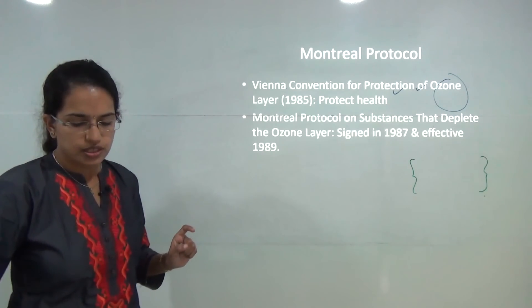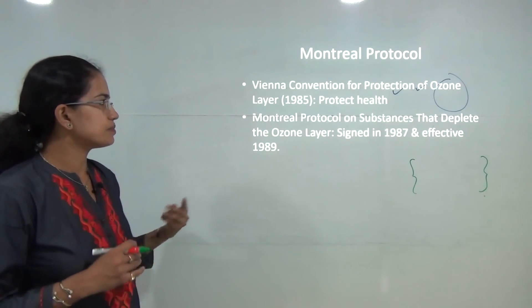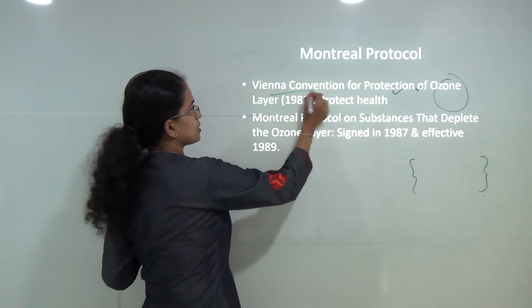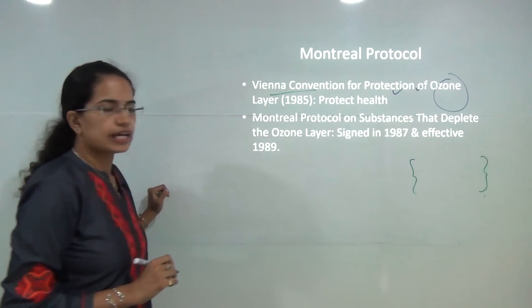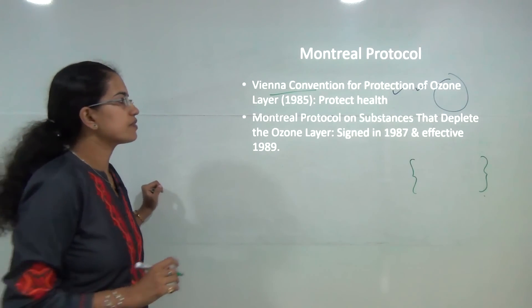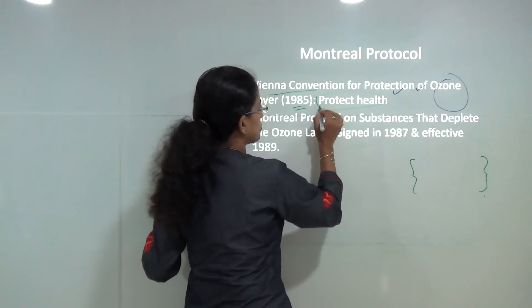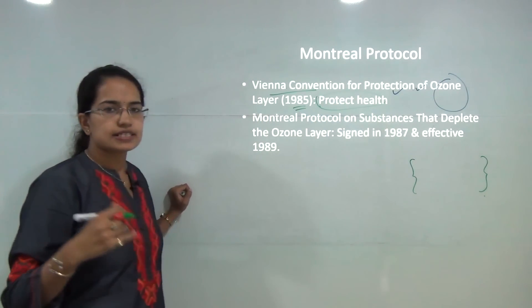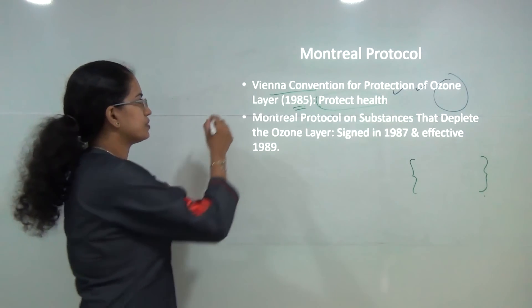The Montreal Protocol was preceded by the Vienna Convention for the Protection of Ozone in 1985, which talked about the harmful impact of ozone layer depletion and warned that depletion would lead to increased harmful UVB radiation reaching the earth's surface.